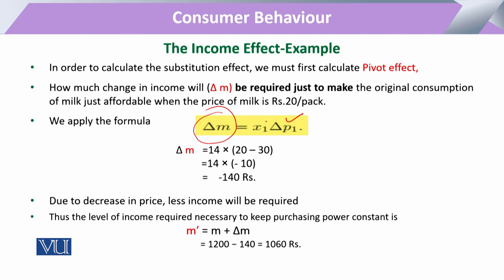When we calculate the new purchasing power of the consumer, we deduct this change from his initial level of income. This gives us the amount of income required to adjust the consumer for the change in price.